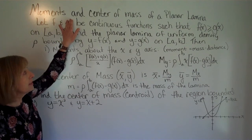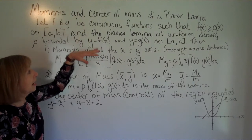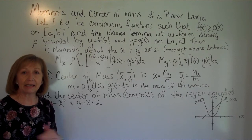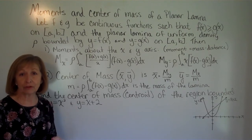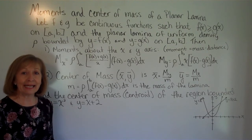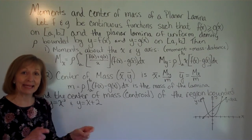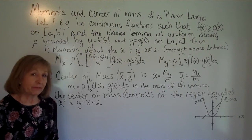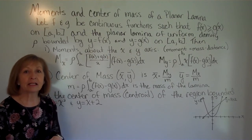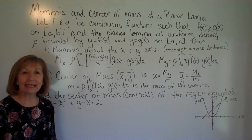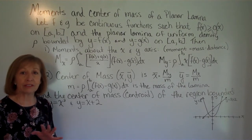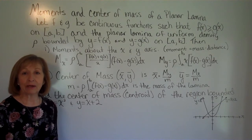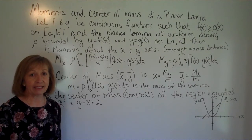So here: moments and center of mass of a planar lamina. When we work on just a horizontal or vertical axis, we're looking at distance times mass to get equilibrium, like a fulcrum. But if we have a two-dimensional region in a plane, we have to account for all the different changes throughout it, and that's where the definite integral comes in.